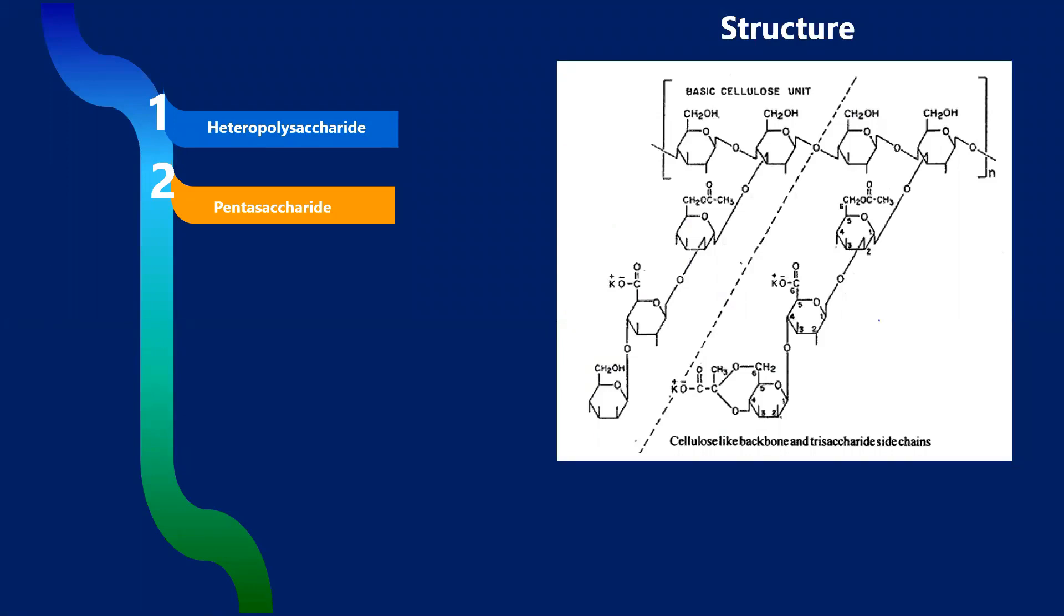At every alternate glucose at the C3 position, we have the side chains, that is the trisaccharides. These are made up of mannose, and to the terminal mannose we have another residue that is glucuronic acid. At the non-terminal portions we have acetyl groups and at the terminal position we have the pyruvyl groups.